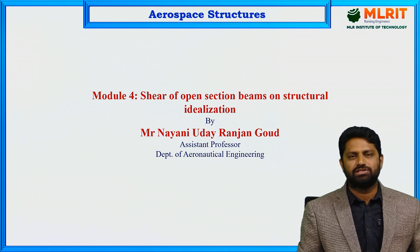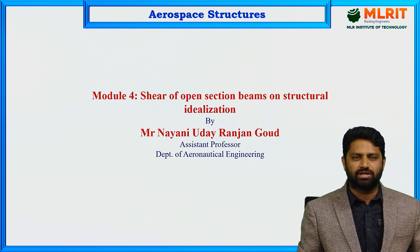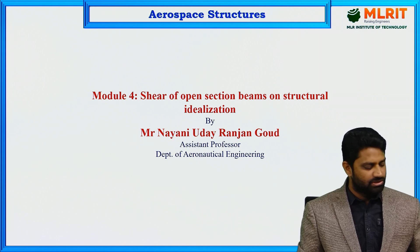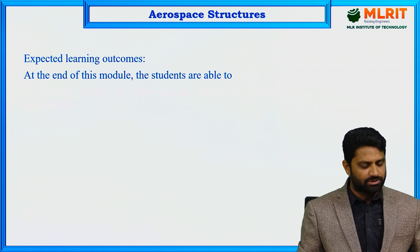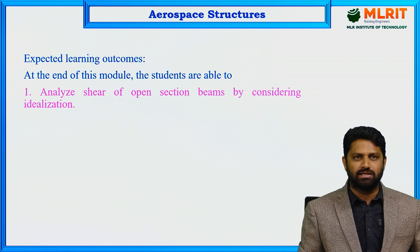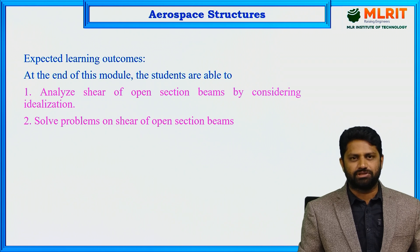In the last session we saw beams which are bending, in which the direct stress distribution is calculated using structural idealization. The learning outcomes for this module are: students are able to analyze shear of open section beams by considering idealization, and students are able to solve problems on shear of open section beams.